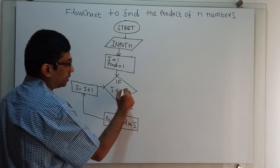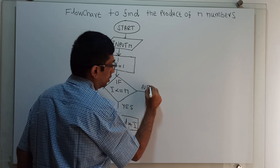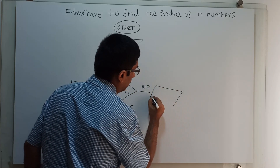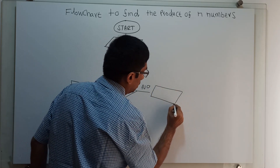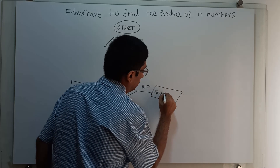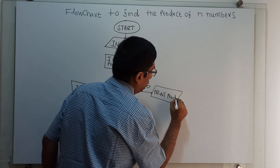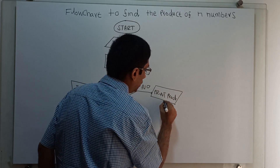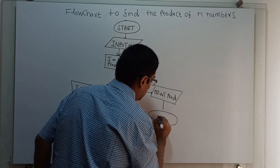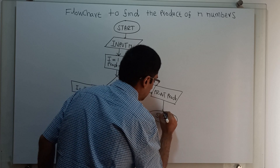If i less than or equal to n is no — meaning false — I am printing the product. This prints the value stored in product, which is the multiplication up to n. And I am ending the flowchart with this logical end star.